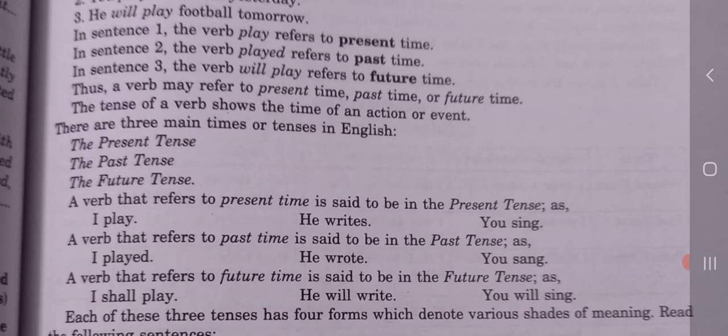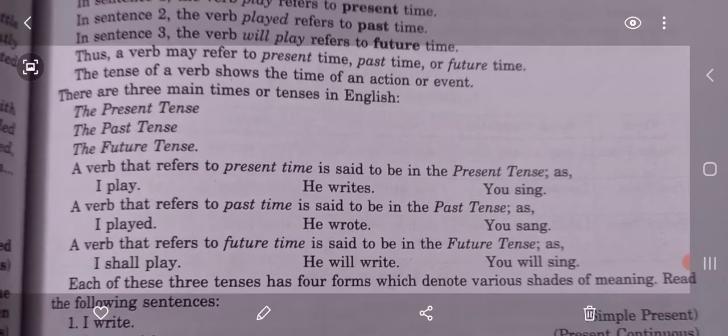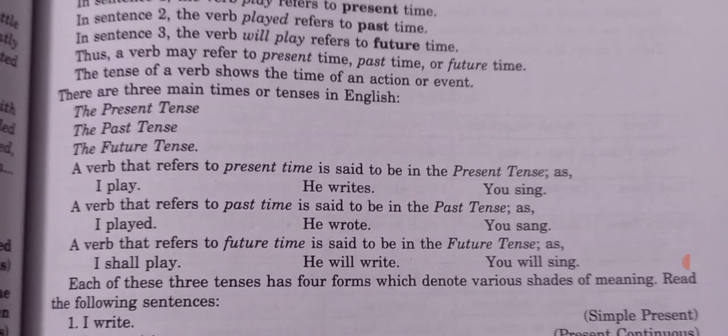It actually depends on the verb — by the verb only we can know whether the tense is present, past, or future. A verb that refers to present time is said to be in the present tense. Examples: I play, he rides, you sing. A verb that refers to past time is said to be in the past tense. Examples: I played, he wrote, you sang.